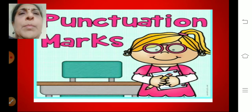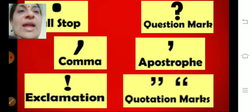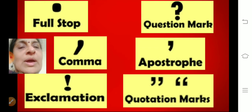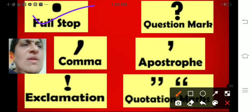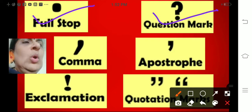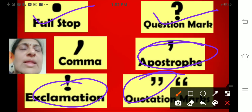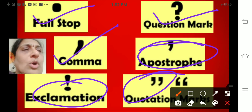Now punctuation marks — the punctuation symbols. There are many punctuation symbols: full stop, question mark, comma, exclamation, quotation marks. We finished with full stop, we finished with question mark. Exclamation and quotation marks you will be learning in third standard. So today we are going to do comma. We are going to learn about comma.